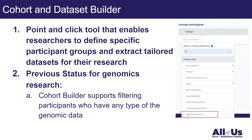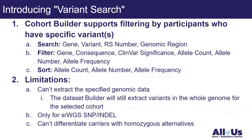The new feature, shown at the bottom, allows you to filter not only by who has any type of genomic data, but also by whether participants have any specific variants. You can filter participants who have specific variants, and you can search by gene, variant, RSID, or genomic region.